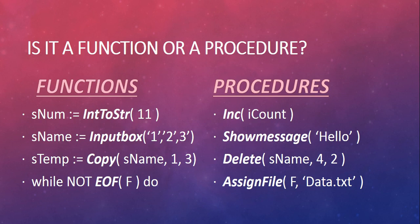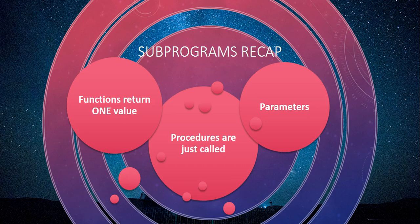Let's look at the summary and recap. Remember, functions return one value only. Procedures are just called - you just call the procedure. With functions, because it's returning a value, you need to have it stored somewhere. You can't just call IntToString in the middle of nowhere - you must have something equal to IntToString, because it needs to send back an answer and you need to store or use that answer. Procedures aren't like that - you just call it and it does its job. Both functions and procedures need parameters - the right parameters in the right order. For example, Copy needs a string, then an integer, then an integer. If you give parameters in the wrong order, it won't work. Parameters are the information - the input - that the function or procedure needs.